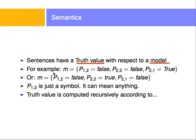For example, my model has variables P12, P22, and P21. I can make assignments to these variables, and another model could make different assignments. The model is the assignment of those variables. P12, P22 — these are just symbols and could be called anything.